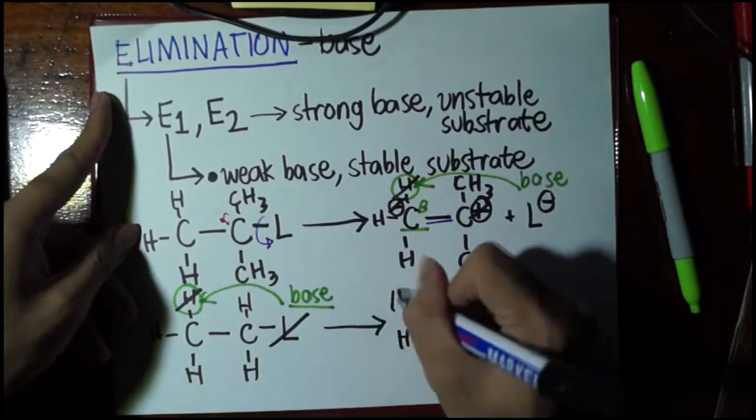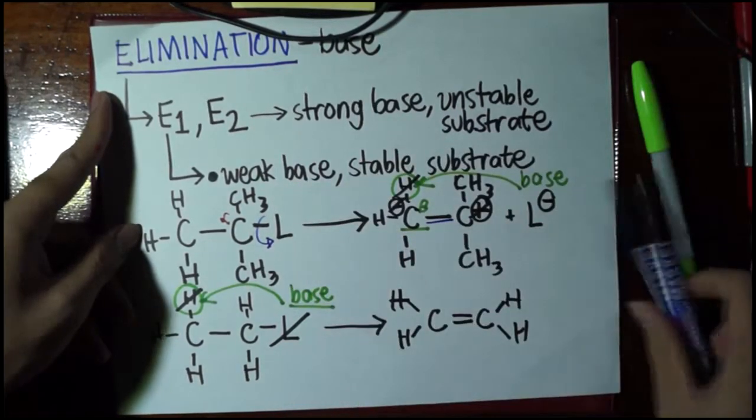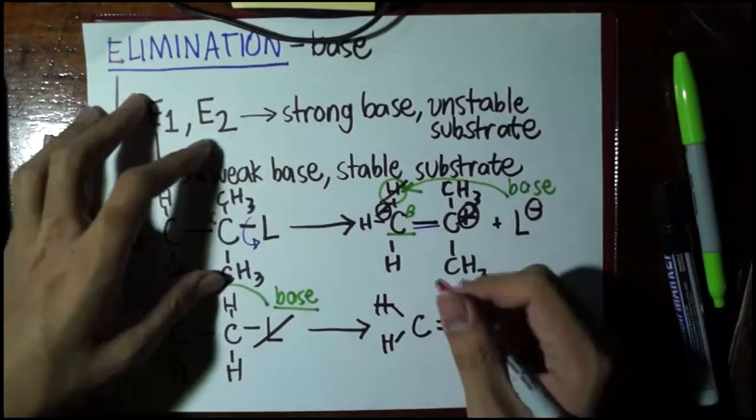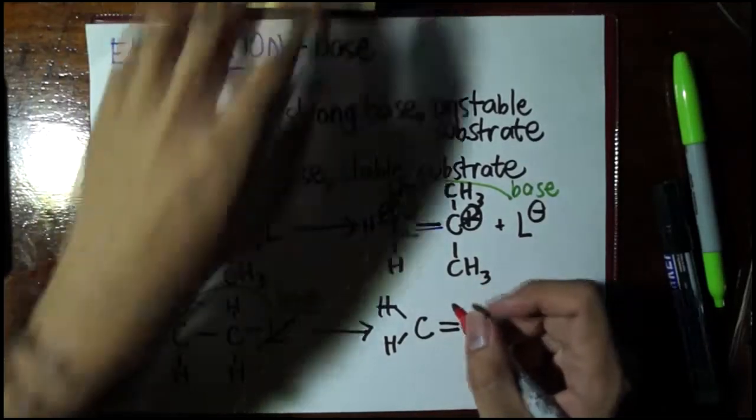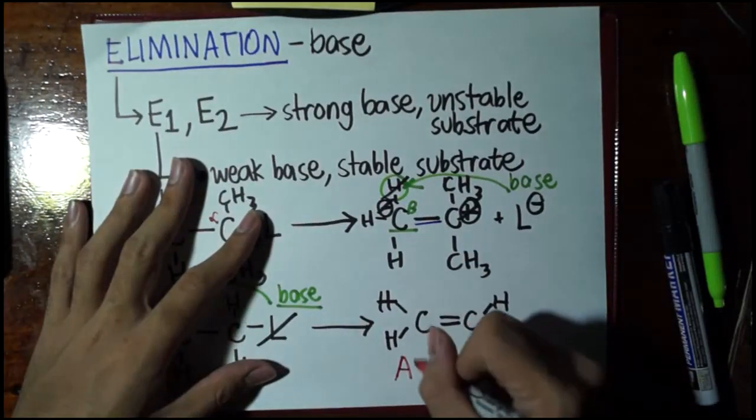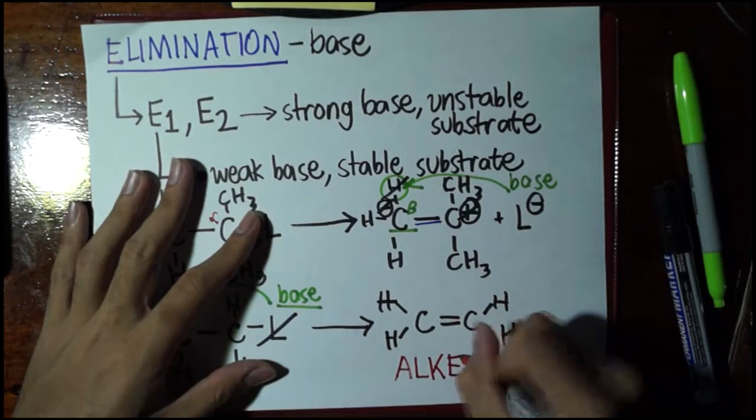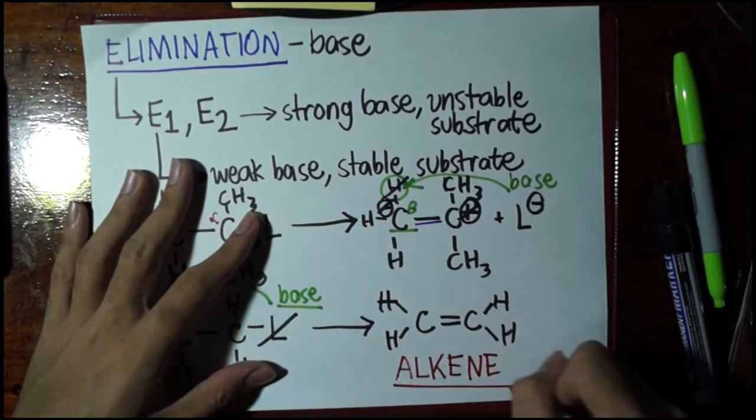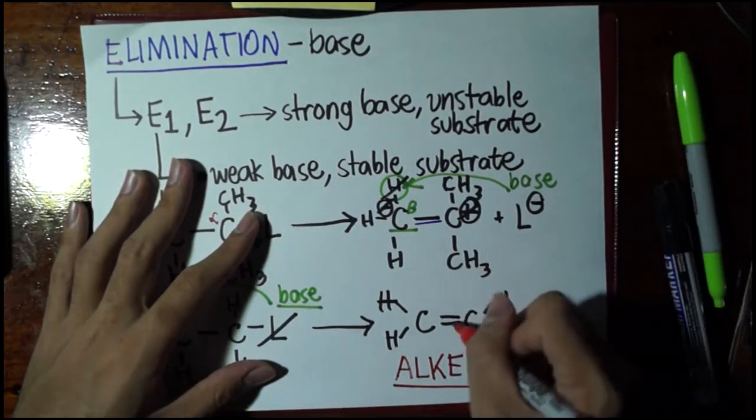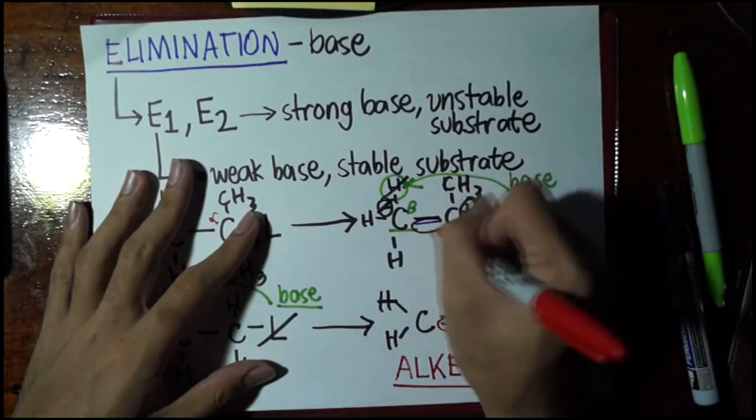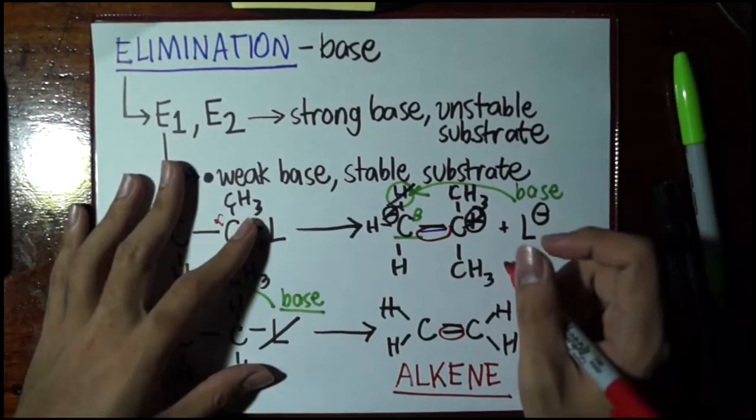And so, we see, in both cases of elimination, that the end product of the reaction is always an alkene, because from this, we have seen the formation of an additional bond, a pi bond, that is.